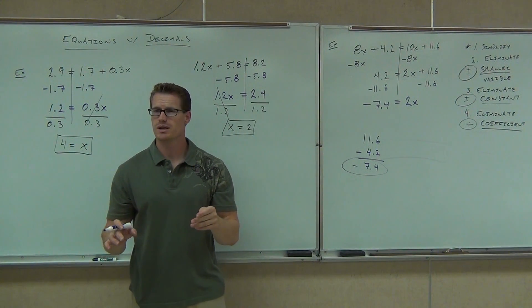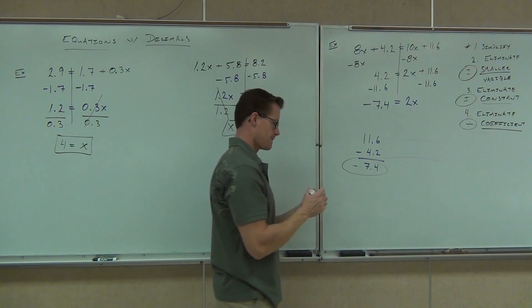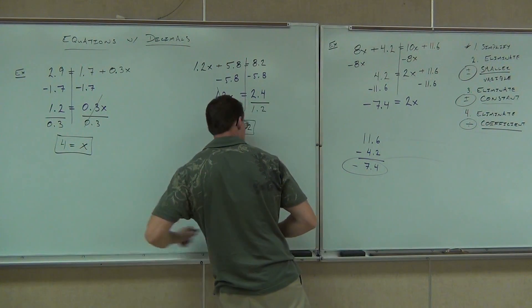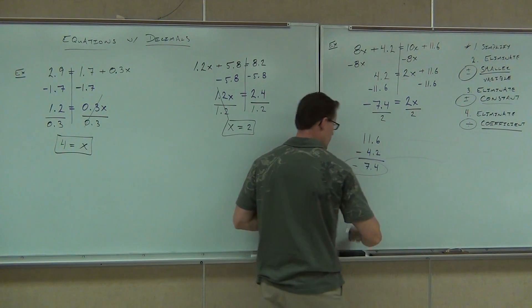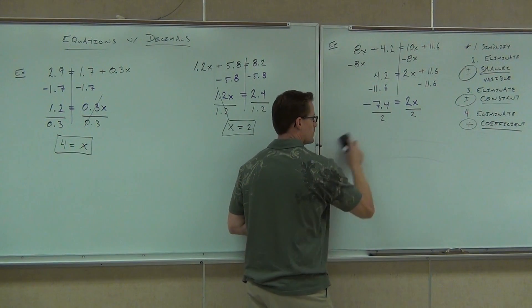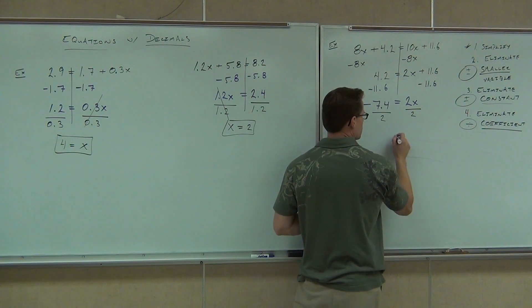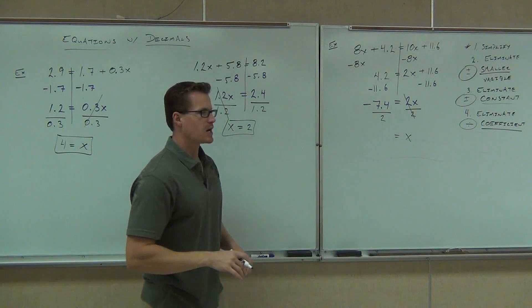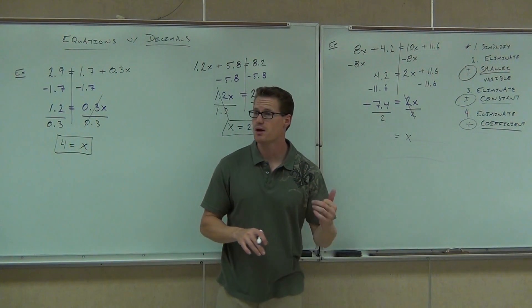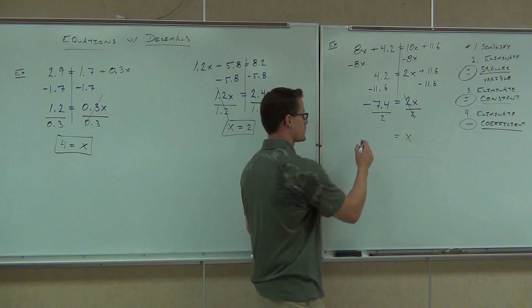That's what goes there. And we're one step away. The last thing you're going to do is divide. If we divide, I know that on the right side, I'll get x. That's what I want to have. On the left side, you're going to do 7.4 divided by 2. Is our answer going to be positive or negative, folks? Negative. Good.